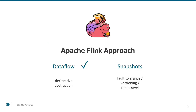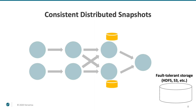That was the high-level overview of the dataflow model. Now, the next thing to look into is how Flink achieves fault tolerance using its snapshots mechanism. Flink's fault tolerance model is based on using fault-tolerant storage — this could be HDFS, S3, or any other storage that matches your fault tolerance expectations for the whole Flink application. So, let's say we have our Flink program running and events are flowing.